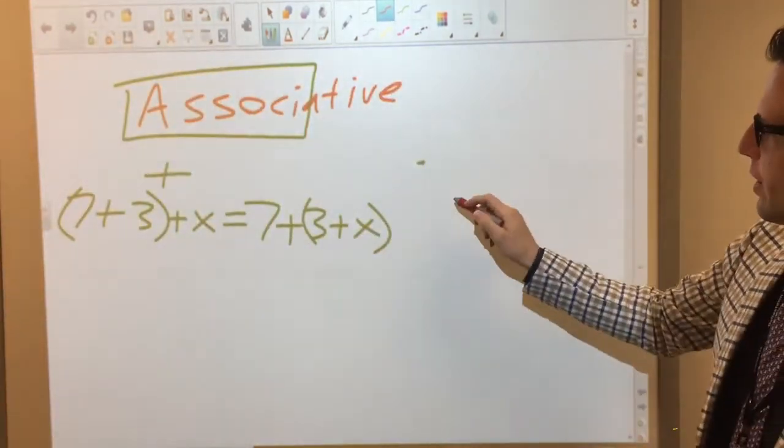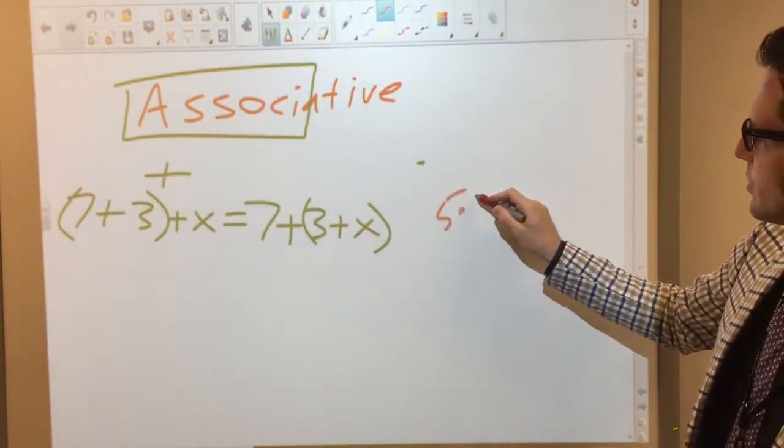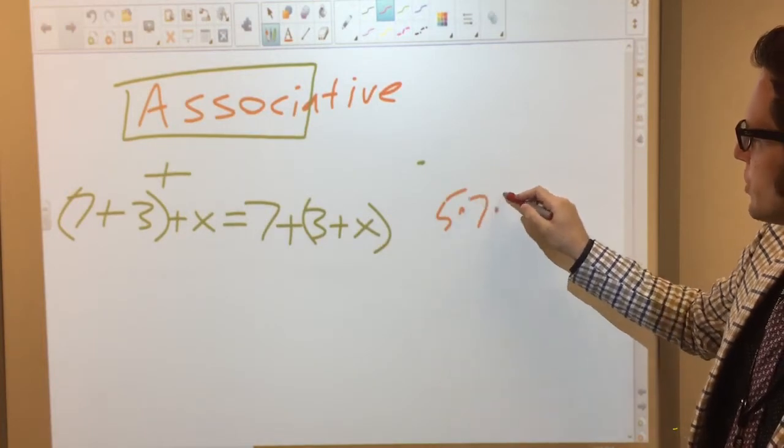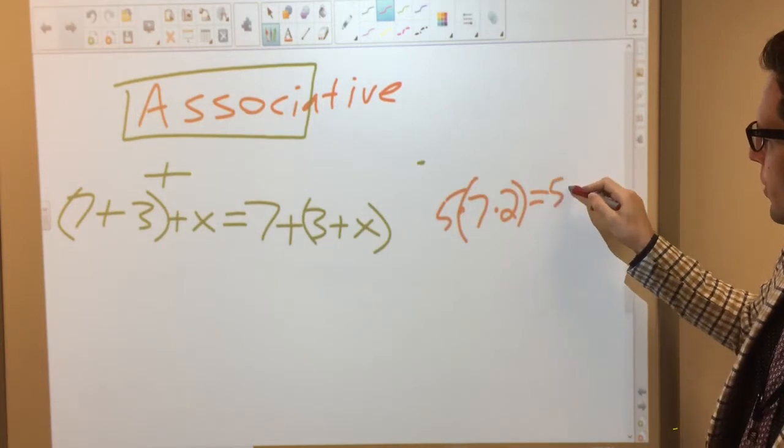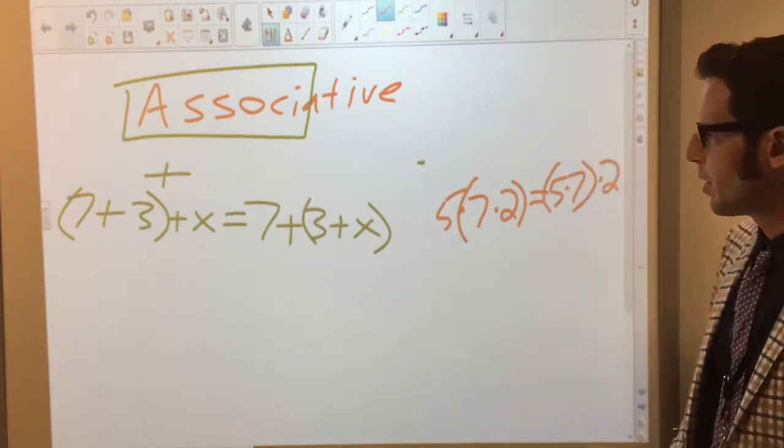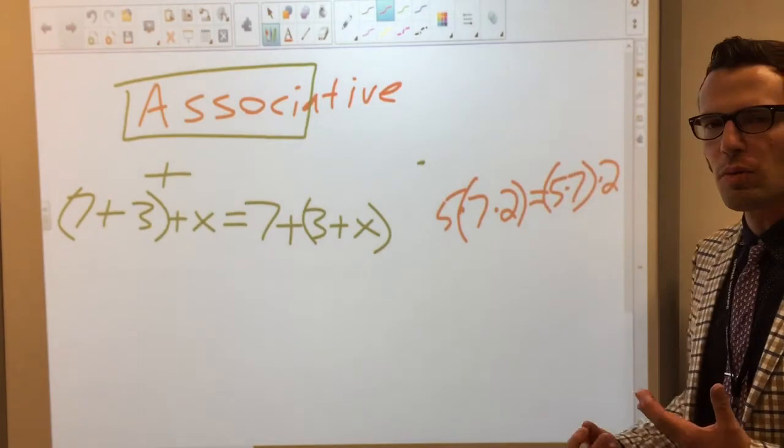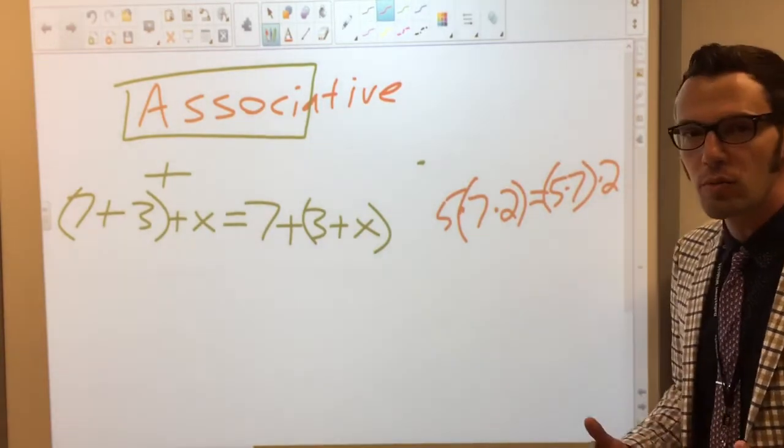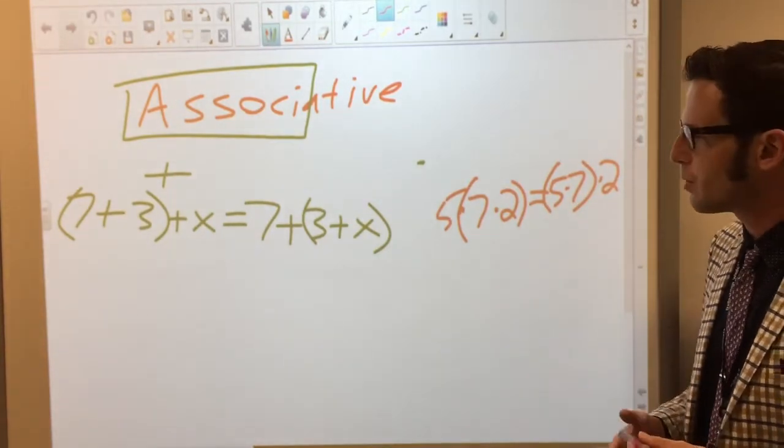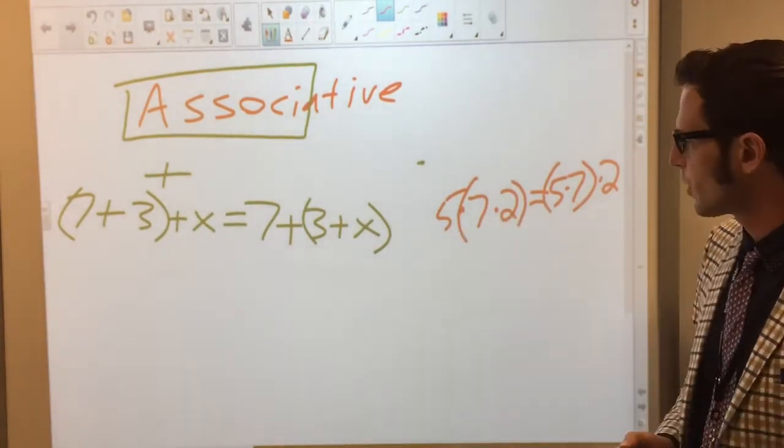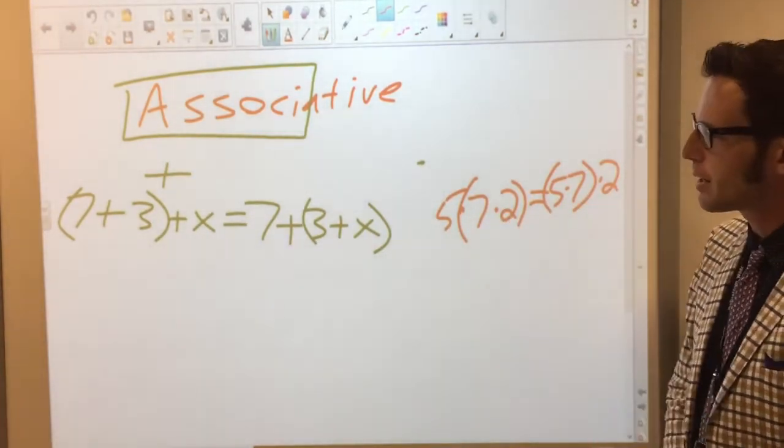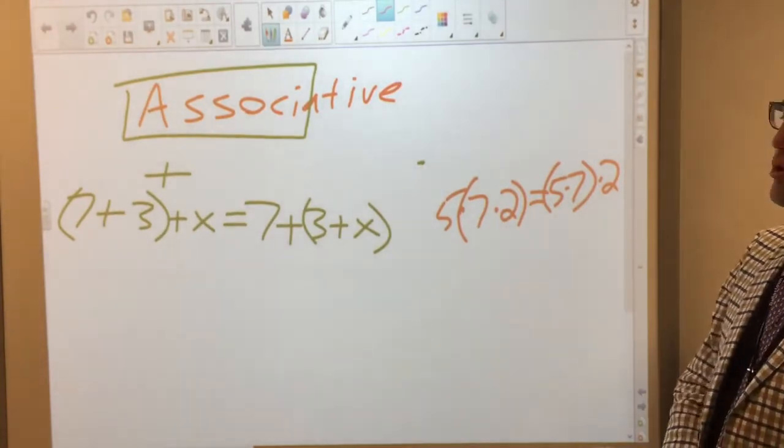You could do that for multiplication as well. You could say, how about 5 times 7 times 2. You could multiply 7 and 2 first, or you could multiply 5 times 7 first, and then multiply the 2 after. Our brains don't multiply multiple numbers at once, they only multiply two numbers at a time, or they only add two numbers at a time, so your brain is associating the numbers that work the best for it when combining them and simplifying. So that's your associative property.